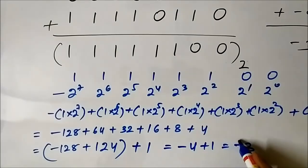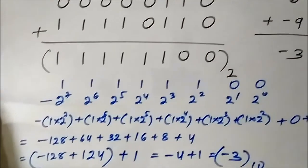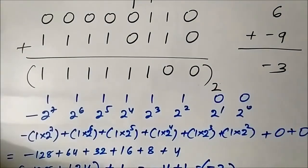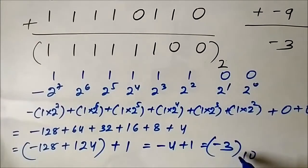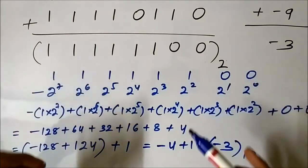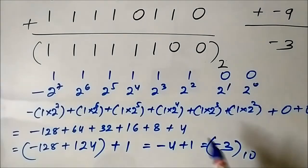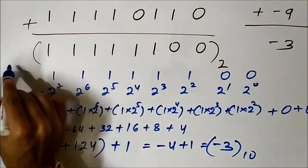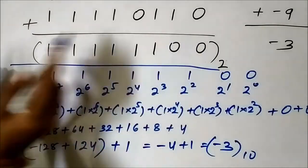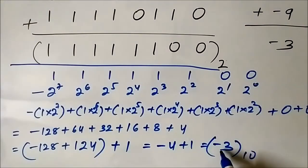So we got the result minus 3, which confirms that 6 minus 9 equals minus 3. The binary result we obtained was correct. This decimal verification step is optional — just done here to confirm. Our actual answer is the binary result itself.